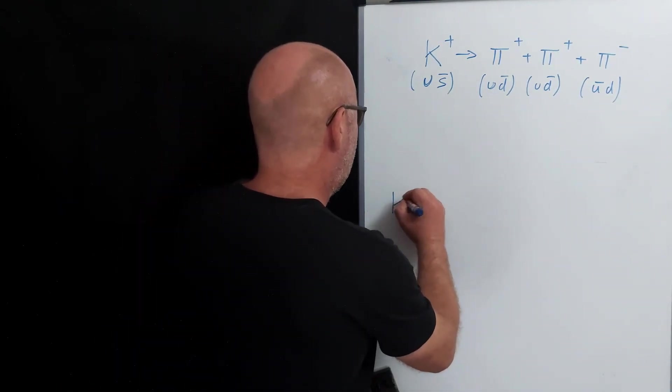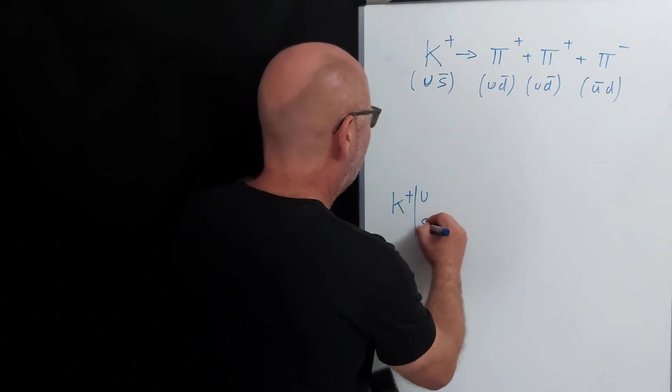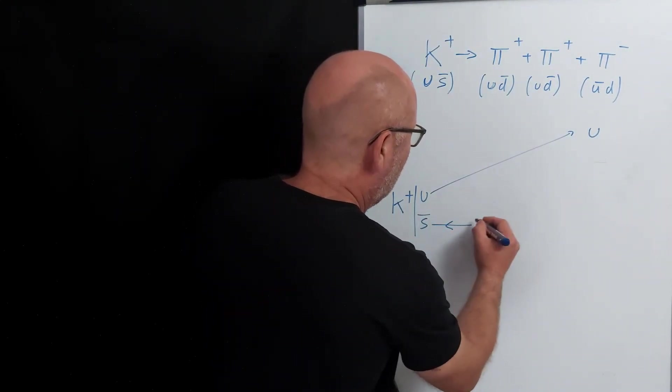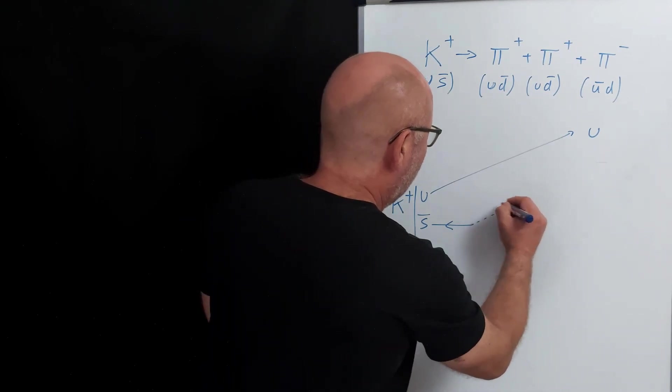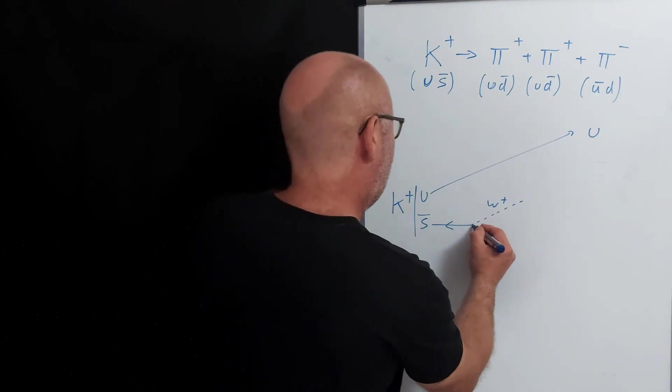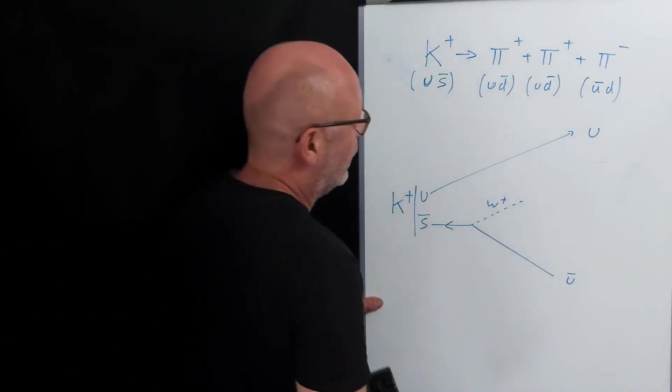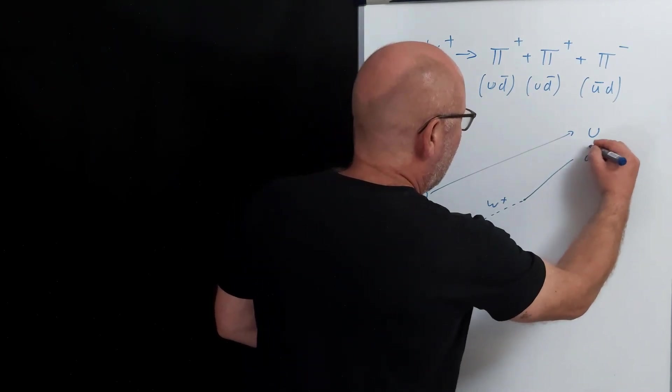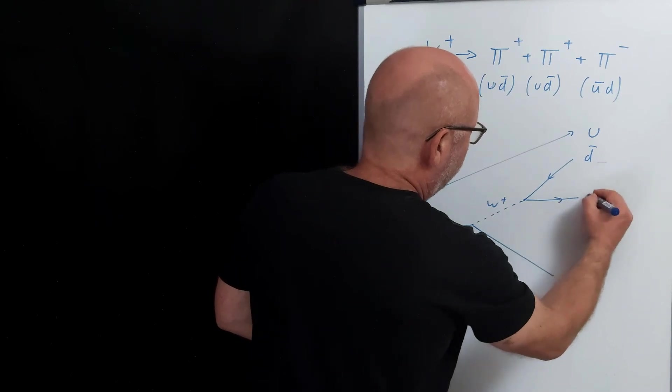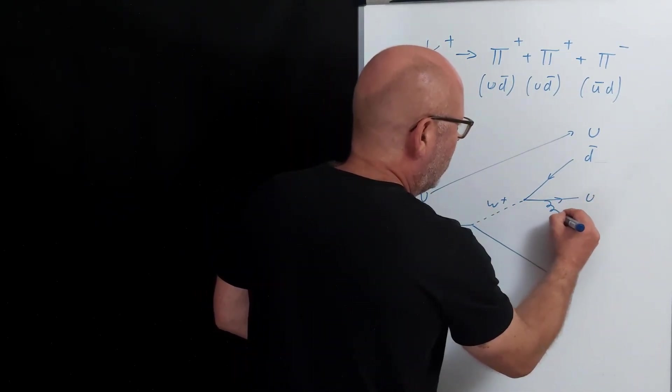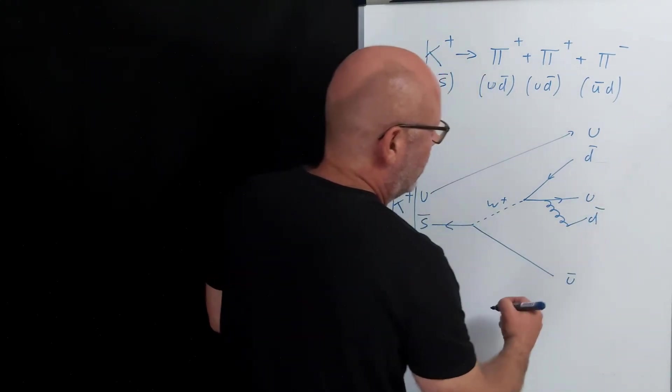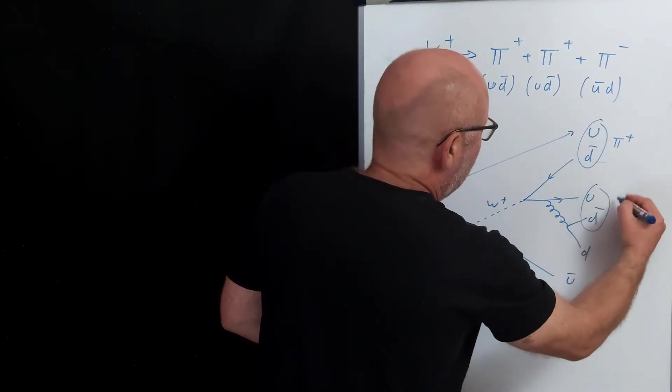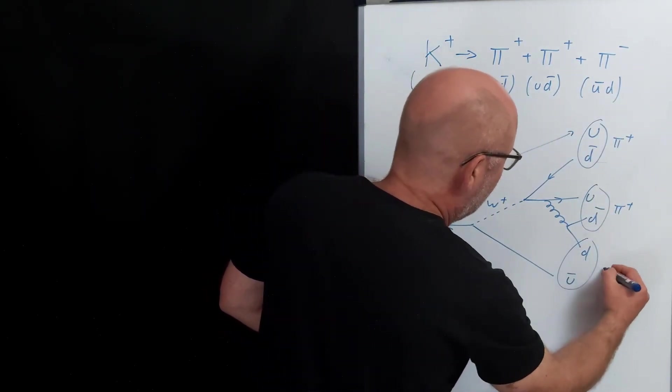So let's start with the K plus. If I remember well, I've got the up here which is conserved as an up. The anti-strange therefore splits into a W plus and, who is it? Anti-up. Then the W plus itself splits into an anti-down and an up. And from the up there's emitted a gluon that splits into an anti-down and a down. And this gives you the pi plus, the pi plus, and the up down, not the up down, so a pi minus.